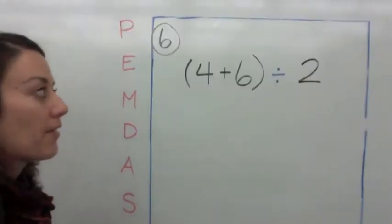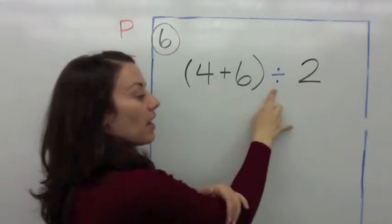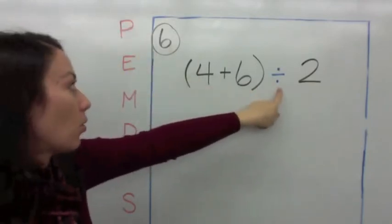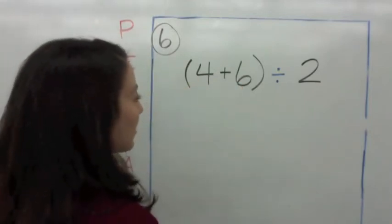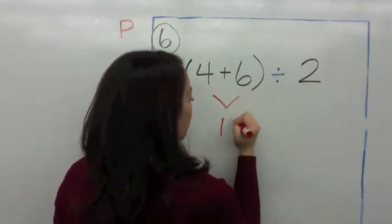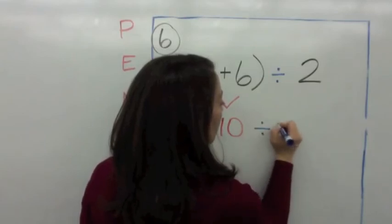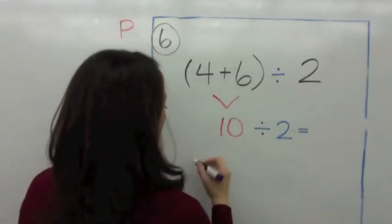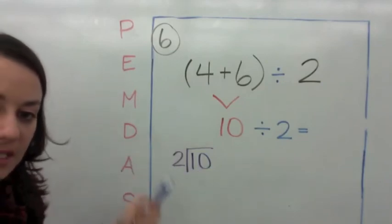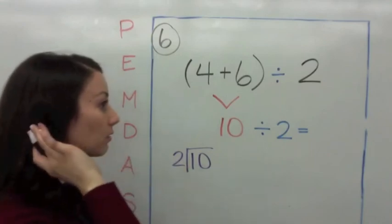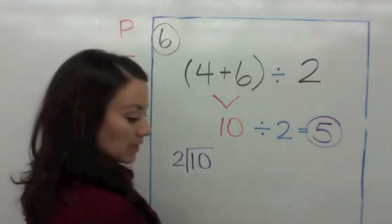In the last example, the parentheses are on the left. It says (4 plus 6) divided by 2. What should you do first — the division or the parentheses? Do the parentheses first. Four plus 6: make a V, that's 10. Then bring down the division sign: 10 divided by 2. The dividend is 10 and the divisor is 2. How many times can you skip count by 2 to get to 10? It's 5. Now try some problems like these on your own.